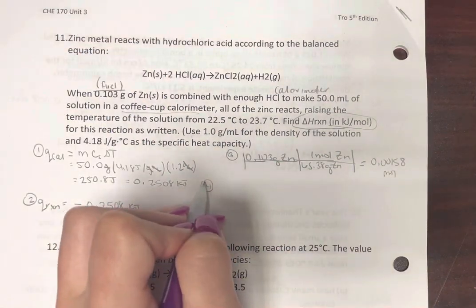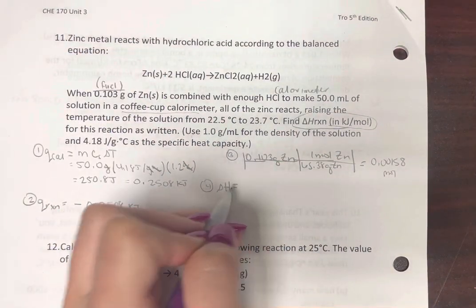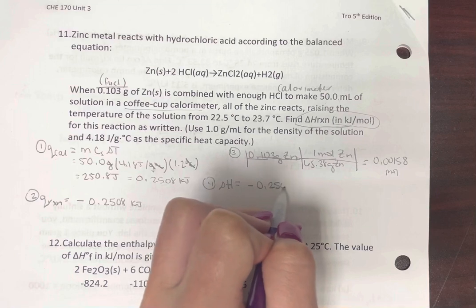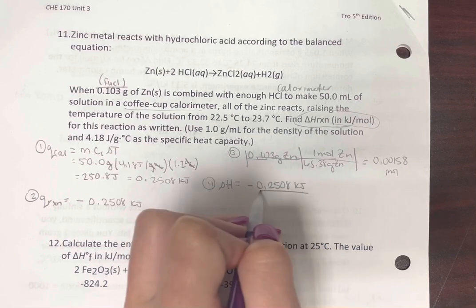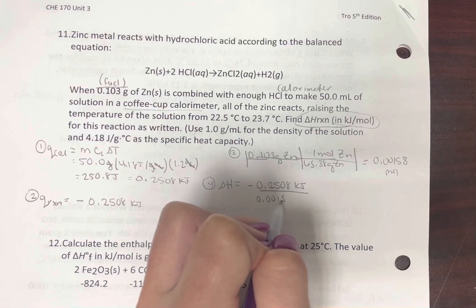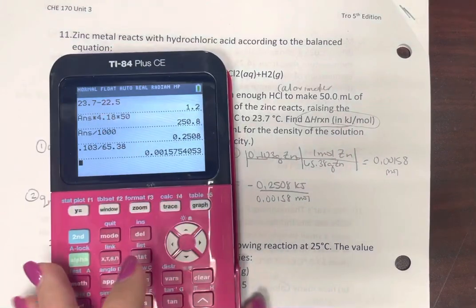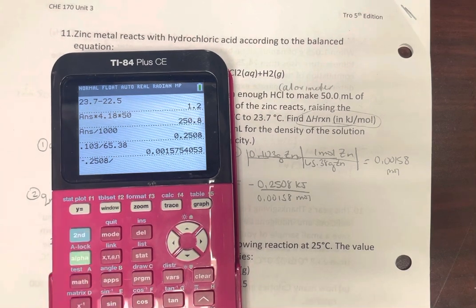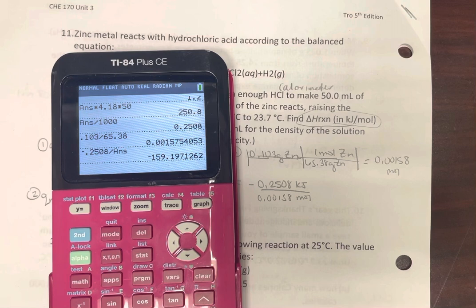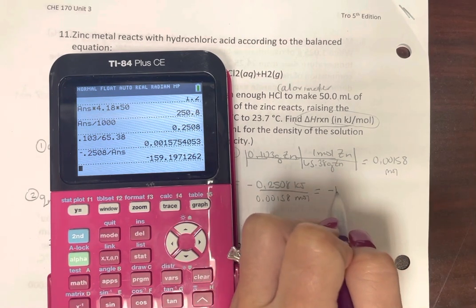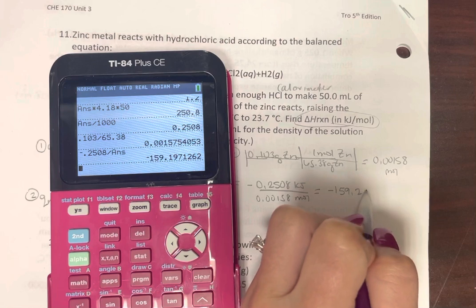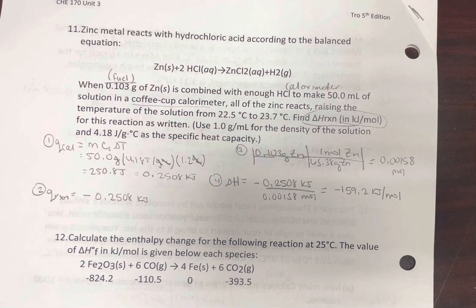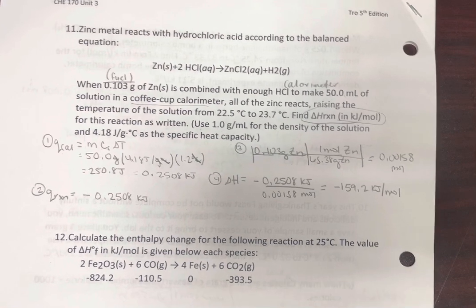Plug this in. Negative 0.2508 kilojoules per 0.00158 moles. I'm going to take some of the rounding out of this and just say divided by my previous answer. So I don't have to type it in as much. So that's going to be negative 159.2 kilojoules per mole. That's not nearly as exothermic as burning things was, but it's still there.